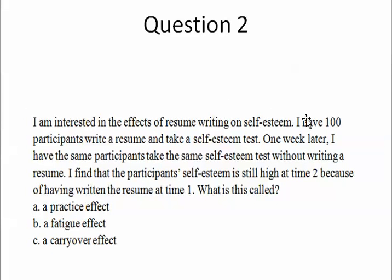In this question, I am testing 100 participants. The 100 participants are writing a resume and taking a self-esteem test at time 1. Then one week later at time 2, the participants are taking the same self-esteem test but without writing a resume. So time 1 is the resume condition and time 2 is the no-resume condition. When participants are tested in the no-resume condition at time 2, their self-esteem is still high because of the fact that they wrote the resume at time 1.